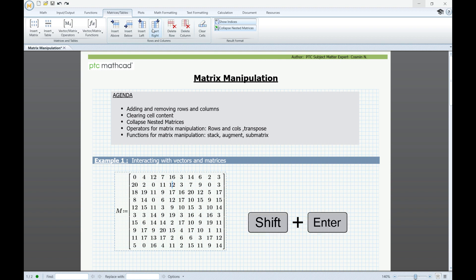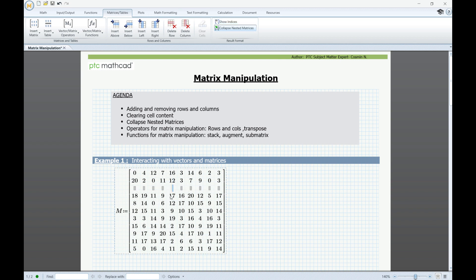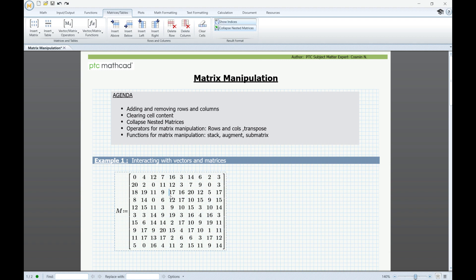Shift-Enter will add a blank row and Shift-Space will add a blank column. In this case, if the cursor is placed in front of the value, the row will be inserted above and the column to the left. If we place the cursor after the value,